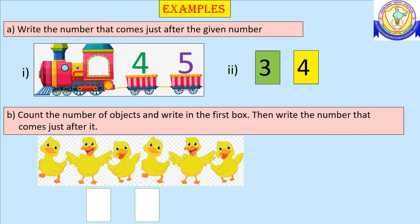Count the number of objects and write in the first box, then write the number that comes just after it. Here we have ducks — how many ducks are there? We have six ducks, so we should write number six in the first box. Now to get the number after six, we count one number forward and get number seven.